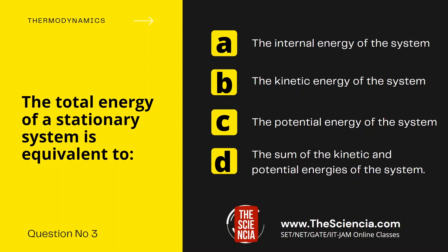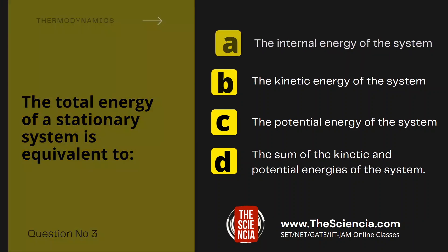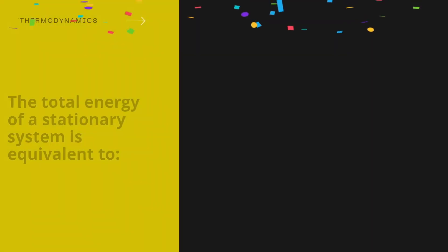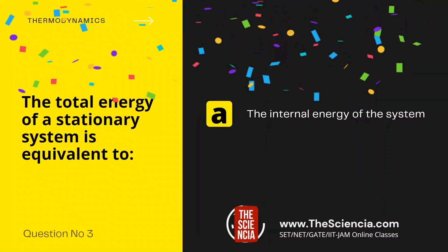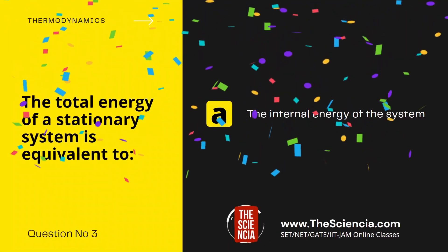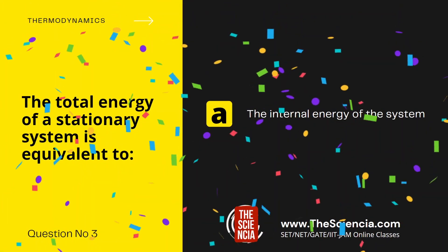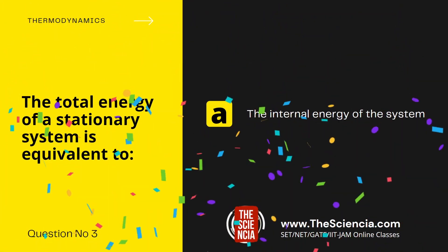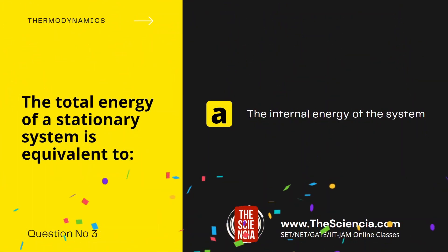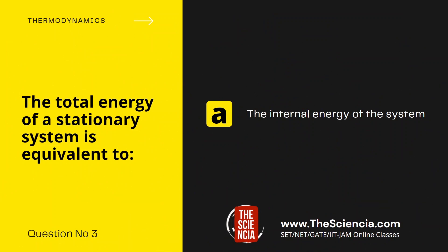Now let us check the correct answer. The total energy of a stationary system is equivalent to the internal energy of the system.